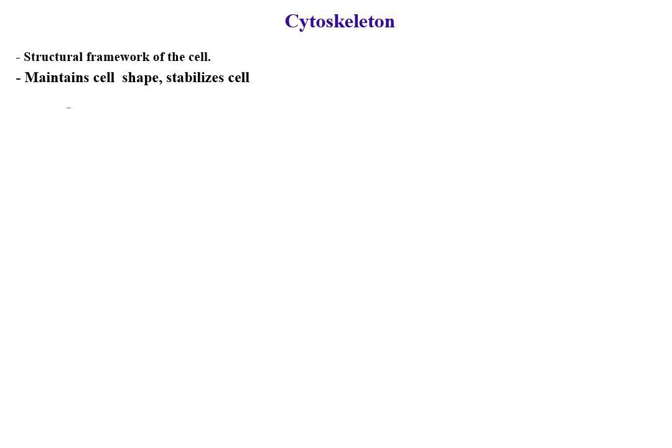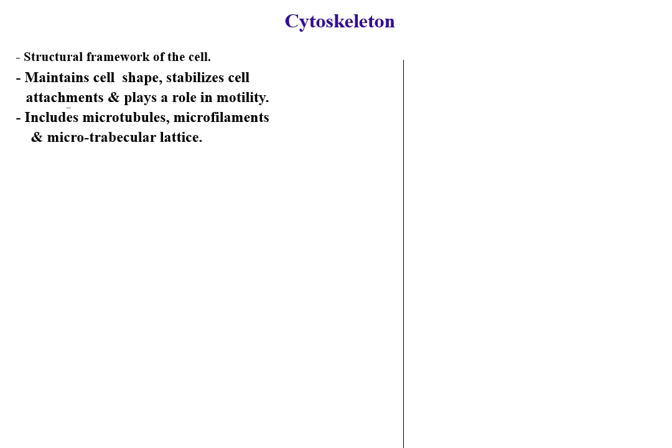The cytoskeleton is another form of cytoplasmic organelle that constitutes the structural framework of the cell. It maintains cell shape, stabilizes cell attachments, and plays a role in motility. The cytoskeleton includes microtubules, microfilaments, and the microtrabecular lattice. Microtubules are rigid structures found in all cells, present either singly or in groups.